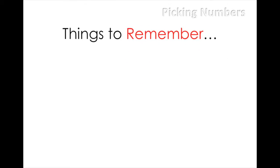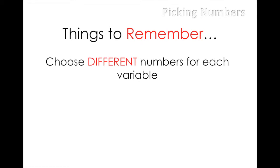There are a couple things you need to remember when using the picking numbers strategy. The first is to always choose different numbers for each variable. If there are multiple variables in the problem, don't go picking the number five, for example, for every variable. This will only confuse your math and may cause you to get the problem wrong.